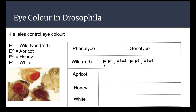So red-eyed flies can be E1/E1, E1/E2, E1/E3, or E1/E4. All of these options would be carriers of either apricot, honey, or white, but they would still have wild type red eyes because E1 is the most dominant.